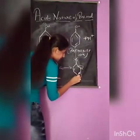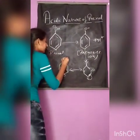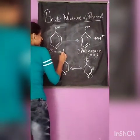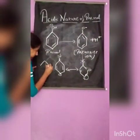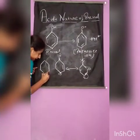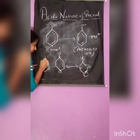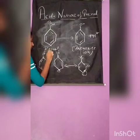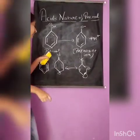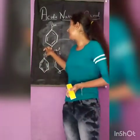In the next resonating structure, the bond gets shifted and here will be the negative charge, with a double bond on oxygen. Now if we see the resonance hybrid structure, we find that in the resonance hybrid structure of the phenoxide ion, there will be a partial negative charge on the oxygen atom.